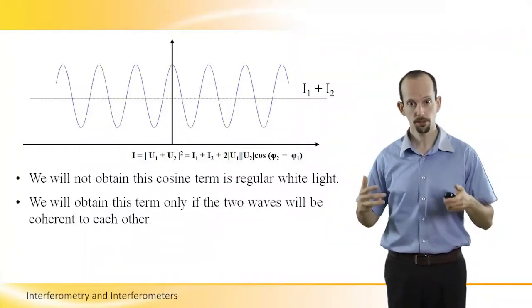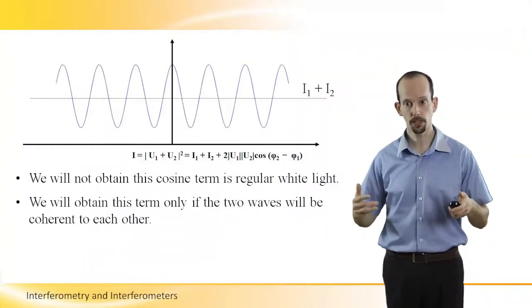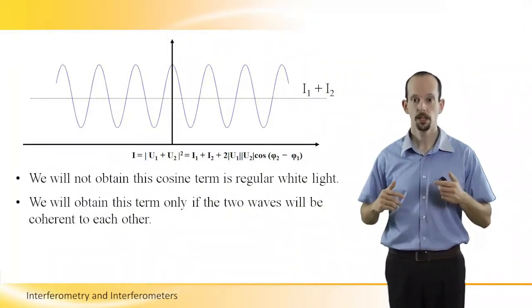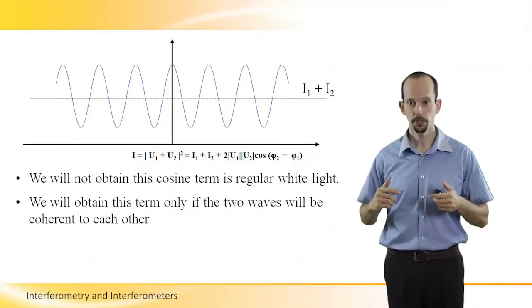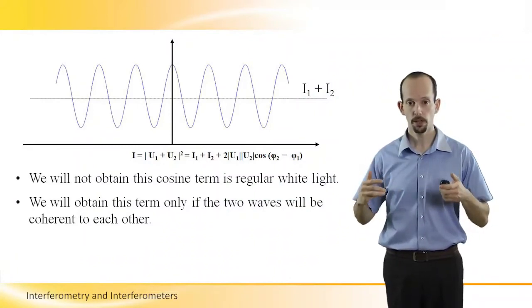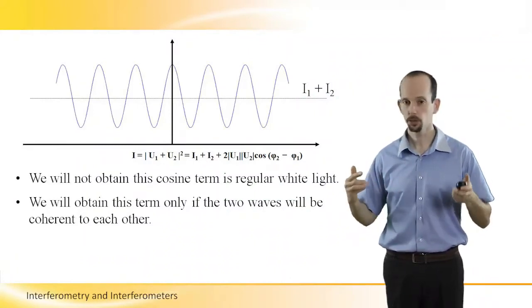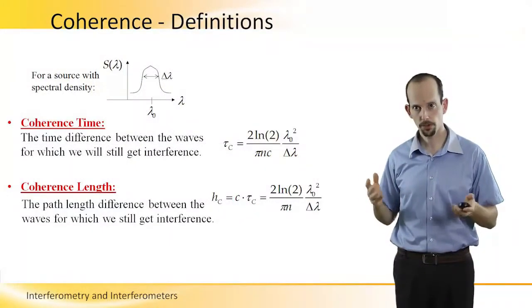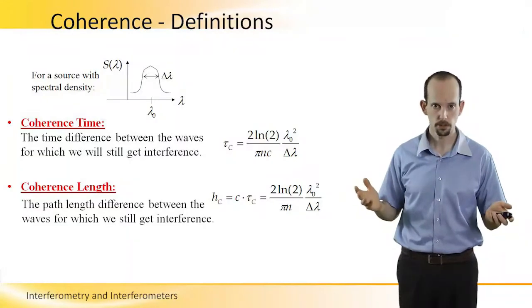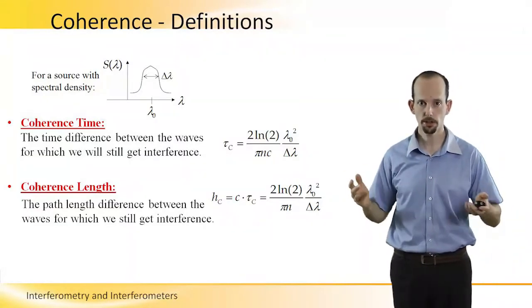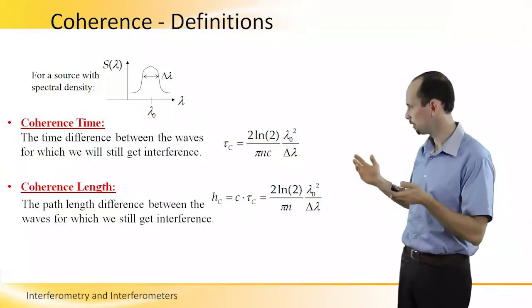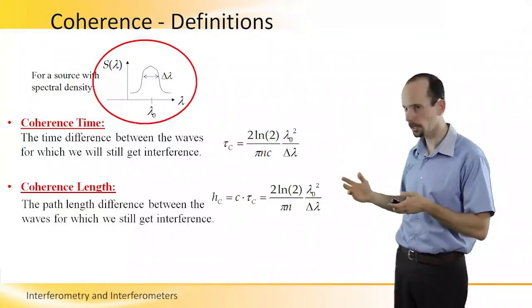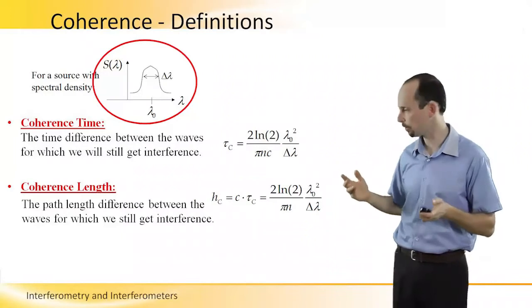This interference is very hard to obtain in white light, which is non-coherent light. In order to obtain this term, these two waves have to be coherent to each other. Here are the definitions of coherence. For a source with a certain spectral density — you can see here a graph of the spectral density as a function of lambda, which is the wavelength of the source.